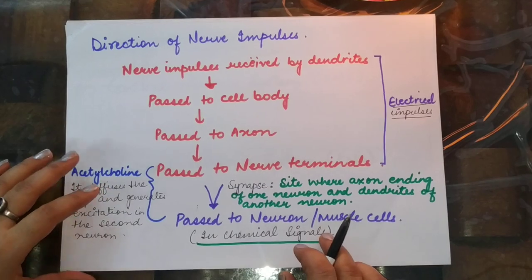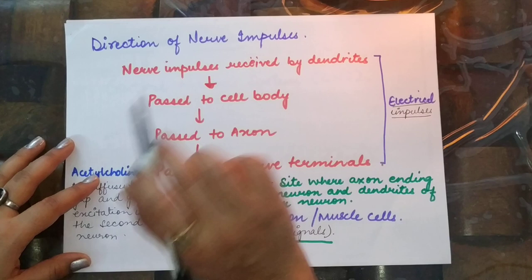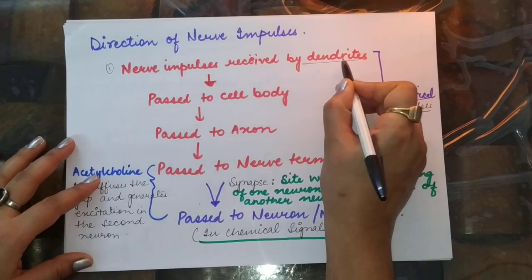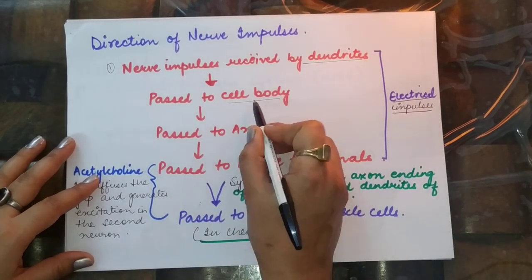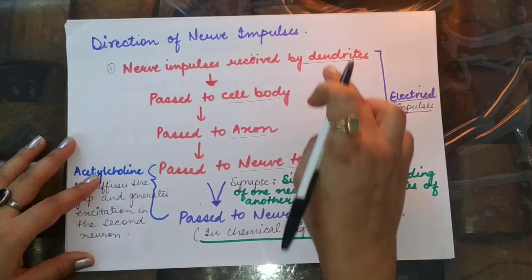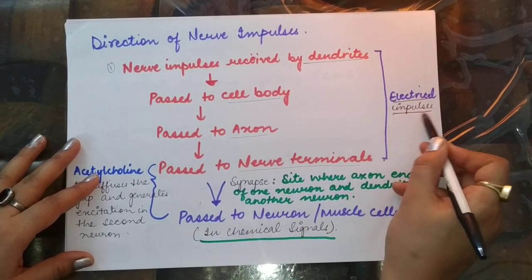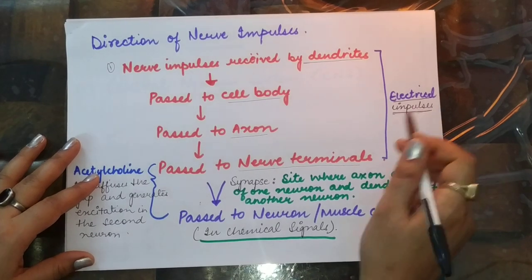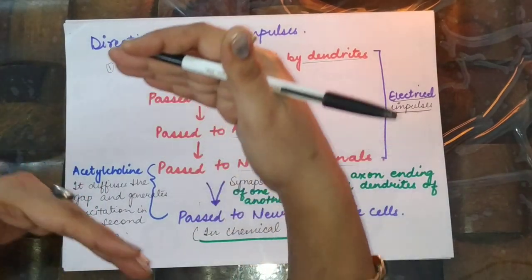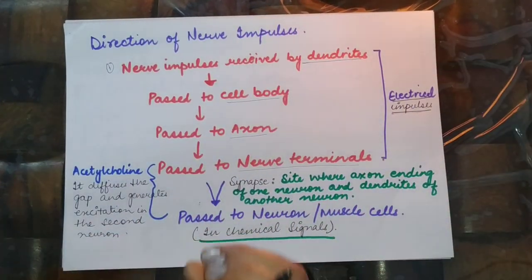The direction of a nerve impulse is as follows: the nerve impulse is received by the dendrite, the dendrite passes it to the cell body, the cell body passes it to the axon, and the axon passes it to the nerve terminals. From the dendrites to the nerve terminals, it is an electrical impulse. When it reaches the nerve terminals, there is a gap between two neurons.